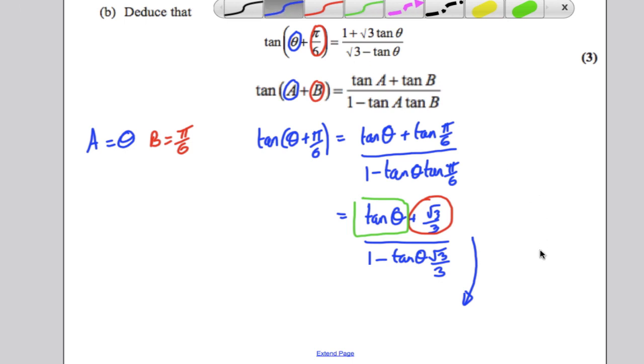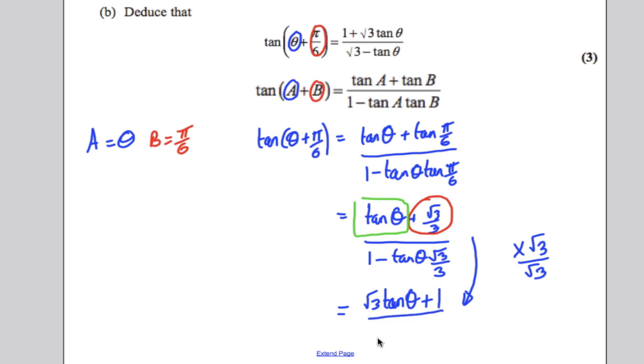So multiply top and bottom, or you can think of that as multiplying by root 3 over 3. And then you get yourself what you're looking for: root 3 tan theta plus 1 over root 3 subtract tan theta, which is exactly what you want, just rearranging the top round. And it was as simple as that.